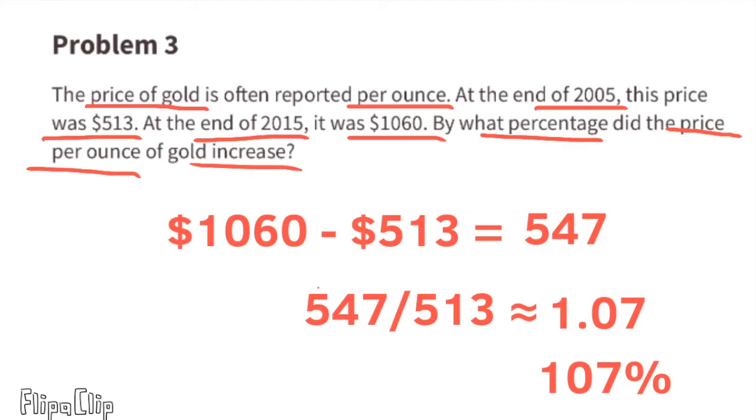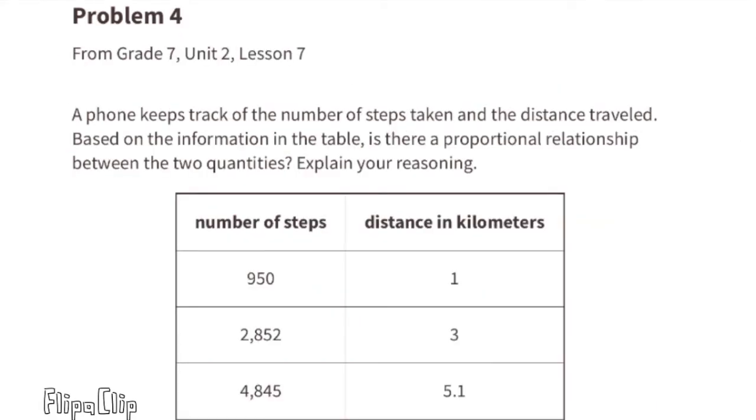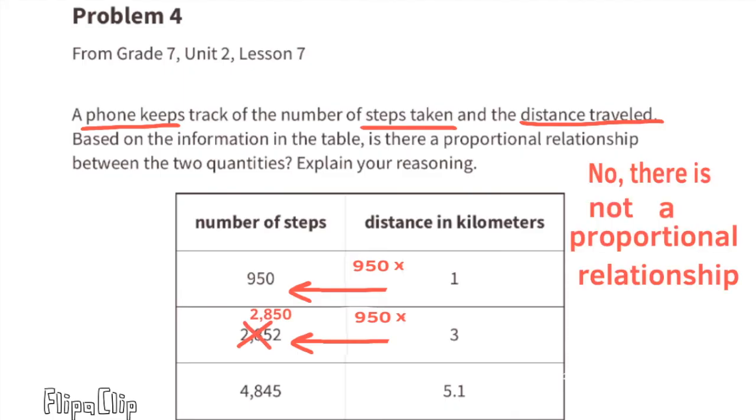Problem number four, from seventh grade Unit 2, Lesson 7: A phone keeps track of the number of steps taken and the distance traveled. Based on the information in the table, is there a proportional relationship between the two quantities? Explain your reasoning. Let's use the information in the table to test this out. 950 steps times 1 kilometer equals 950. If there's a proportional relationship between the two quantities, then 950 times 3 would equal 2,852. But 950 times 3 equals 2,850. So no, there is no proportional relationship between the two quantities because 2,852 is not the same as 2,850.